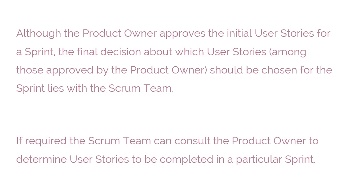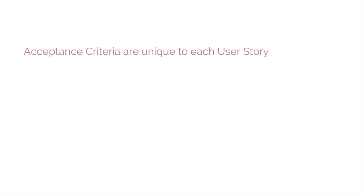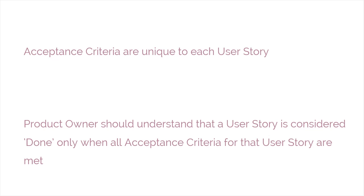However, if required, the scrum team can consult the product owner to determine user stories to be completed in a particular sprint. Acceptance criteria are unique to each user story and are not a substitute for a requirements list. The product owner should understand that a user story is considered done only when all acceptance criteria for that user story are met.